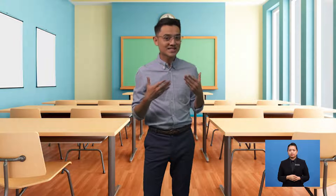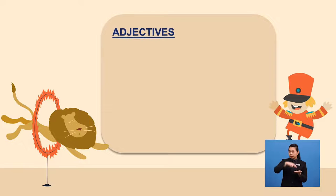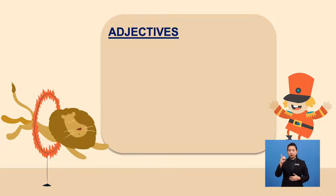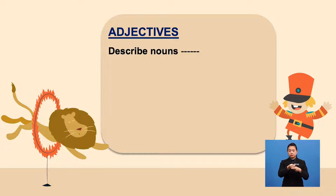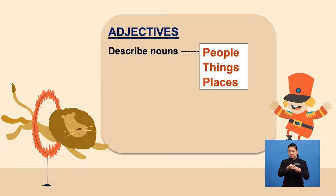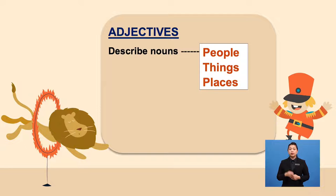Let's look at the screen. Here's a recap of what we just saw. An adjective is a word that is used to describe nouns. We know what nouns are — nouns can be people, things, and places. Adjectives give qualities to nouns.